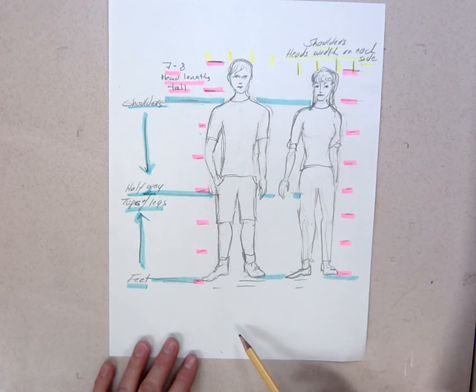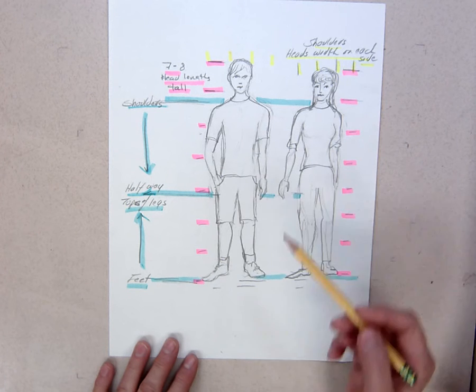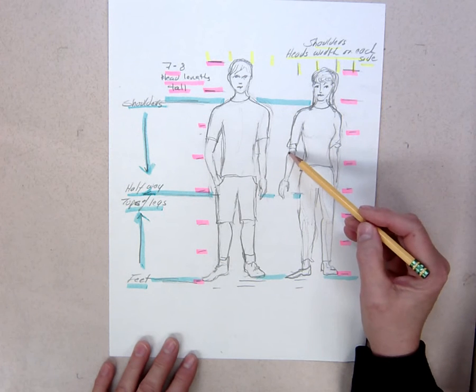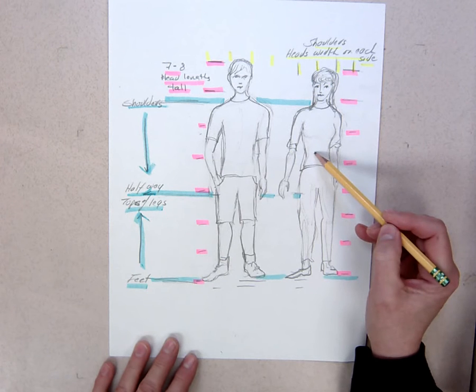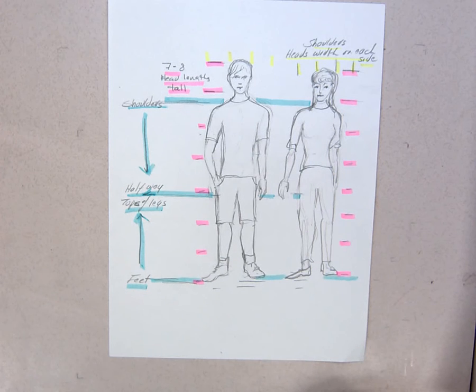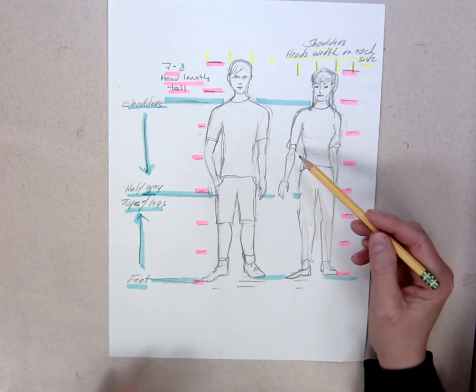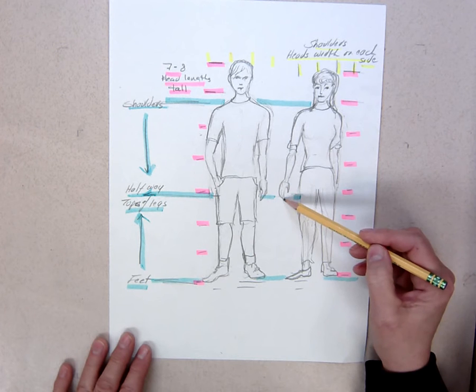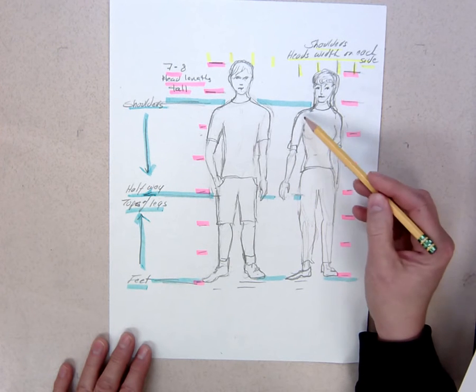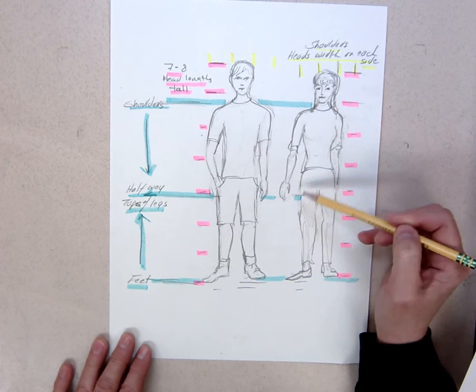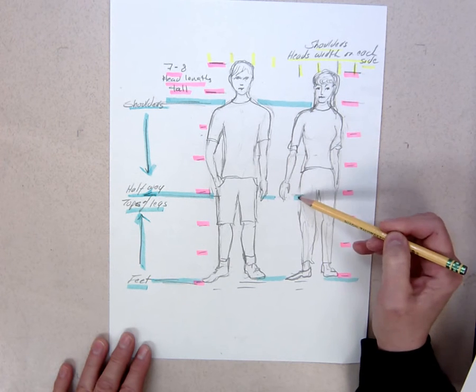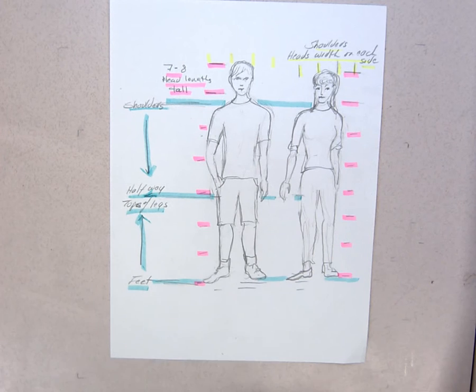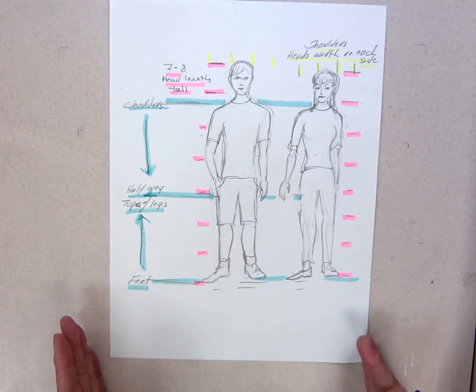The other one is length of arms. People tend to draw arms with fingertips ending at the waist. That's actually where your elbow is. If you bring your elbow in to your side, it lands where your waist is. That means you've got another half of an arm from your elbow to your fingertips. So shoulder to elbow equals shoulder to waist. Elbow to fingertips equals waist to upper thigh for both men and women.